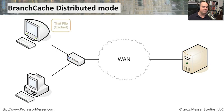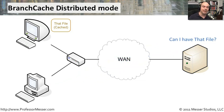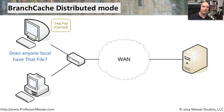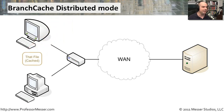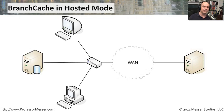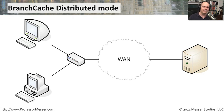When that first workstation caches the file locally, a second workstation at the same branch requesting the same file goes through a similar process. The server sends back content identifiers, and that second workstation broadcasts locally asking if anyone has the file. The first workstation responds and shares its locally cached copy. This is a simple way to distribute files across multiple Windows 7 machines in an environment without requiring a local server at the remote site.